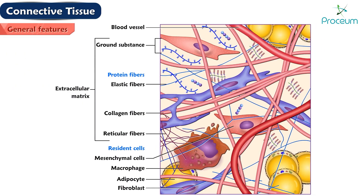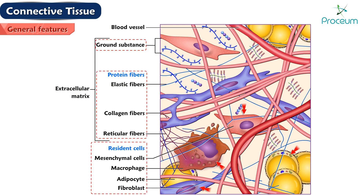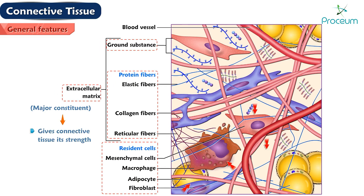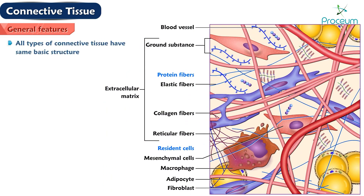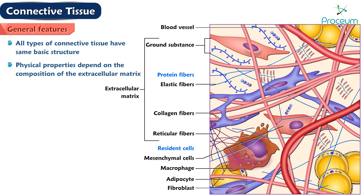Connective tissue is made of cells, fibers, and ground substance. Unlike other tissues, the major constituent of connective tissue is its extracellular matrix. This extracellular matrix gives connective tissue its strength. Although all types of connective tissue have the same basic structure, their physical properties depend on the composition of the extracellular matrix.